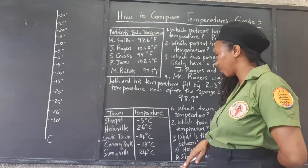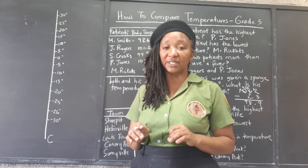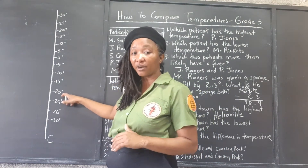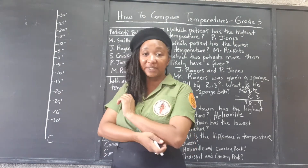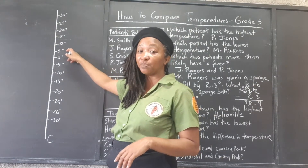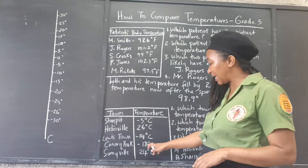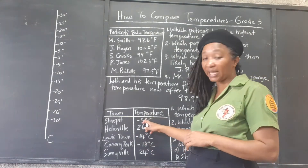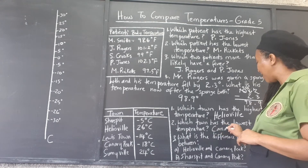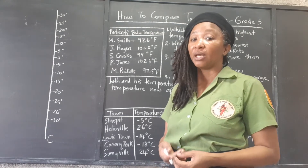Which town has the lowest temperature? When we get below zero, into the negative numbers, the bigger the digit that follows the negative sign, the lower the temperature. So negative 20 is a colder temperature than negative 15, and negative 25 is lower than 5 degrees. The lowest temperature here would be negative 18 — it's lower than negative 14 and lower than negative 5. The town with the lowest temperature is Canary Peak, which judging by the name is high on a hill and likely getting snow.